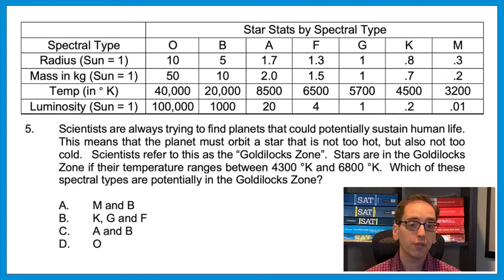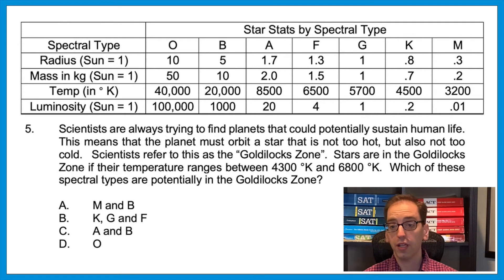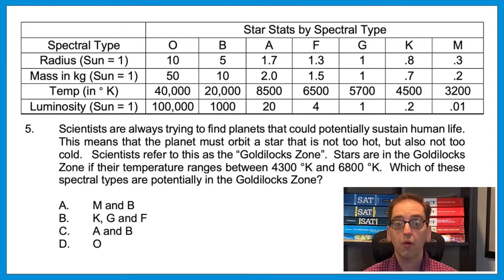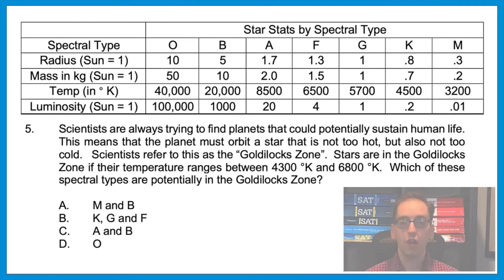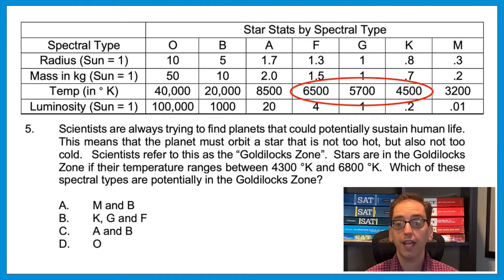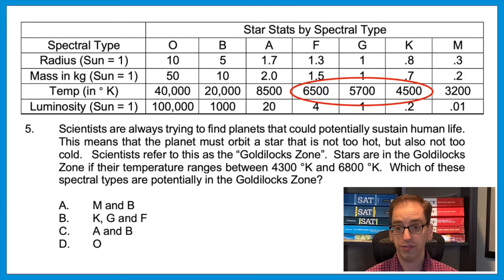Question five: Scientists are always trying to find planets that could potentially sustain human life, meaning the planet must orbit a star that is not too hot but also not too cold — the Goldilocks zone. Stars are in the Goldilocks zone if their temperature ranges from 4,300 to 6,800 degrees. Which spectral types are potentially in the Goldilocks zone? Stars K, G, and F all have numbers that fall in that range. The answer is B: K, G, and F. Like before, this question just wanted you to read the data.